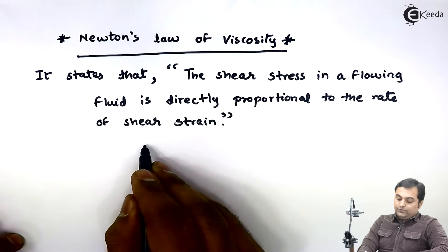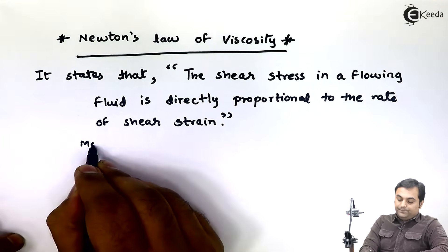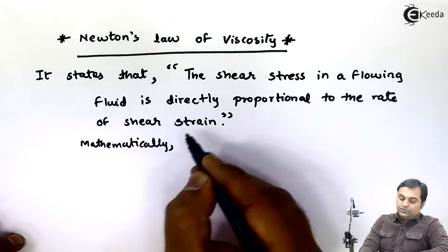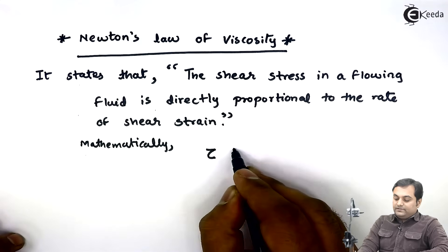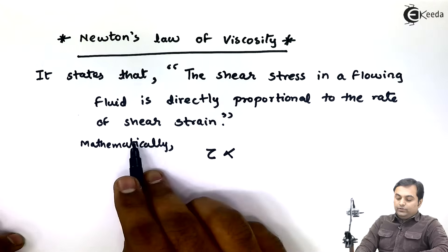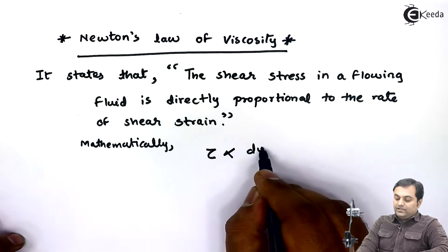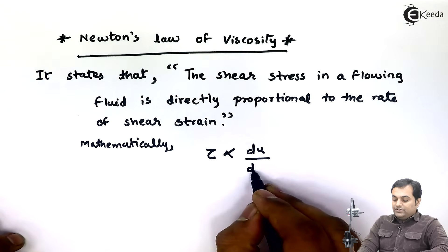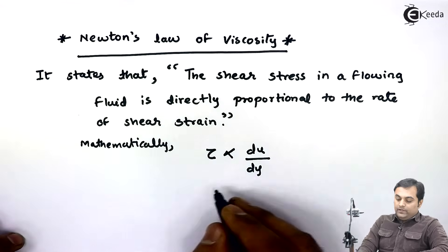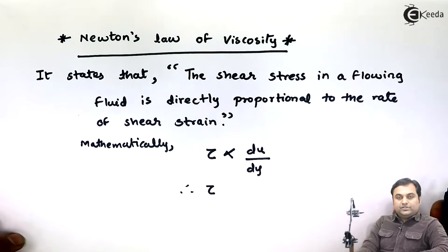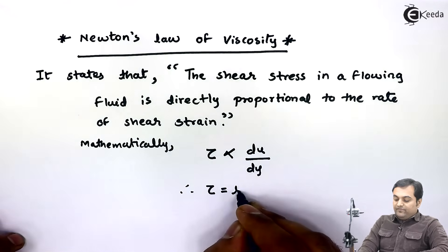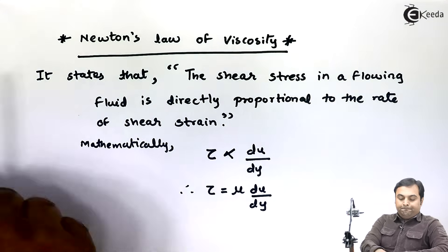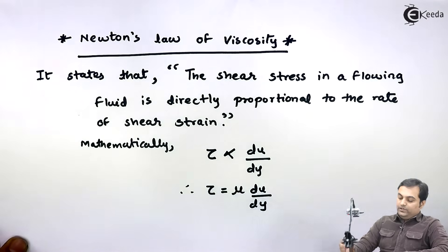Mathematically, shear stress is denoted by tau (τ) and it is directly proportional to the rate of shear strain, which is the change in velocity du upon the change in distance dy. Replacing the coefficient of proportionality gives us τ = μ × (du/dy).